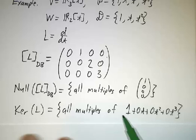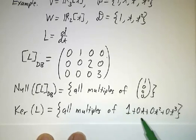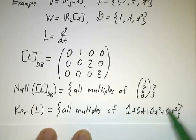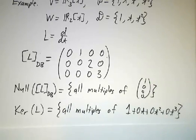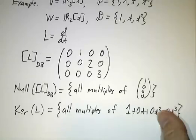So the kernel is a set of polynomials, but they're the polynomials whose coordinates happen to sit in the null space. So that's how things fit together in general.